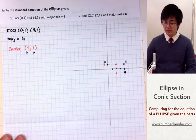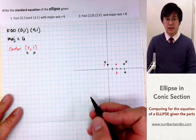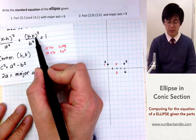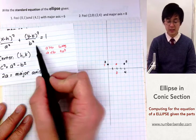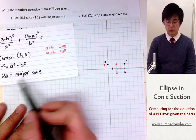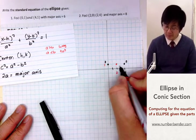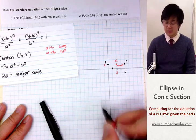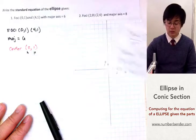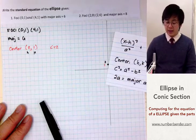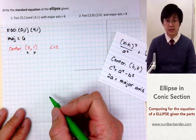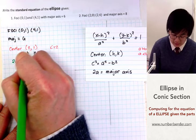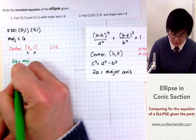Going back to our ellipse, since we have our center at h and k, the next thing we can find is the value of c. In our formula we have a, b, h, and k. We know h and k; we just need to find a and b. The value of c is the distance from the center to the focus, which is 2 units. Then using 2a equals the major axis, and the major axis is 6, so a equals 3.